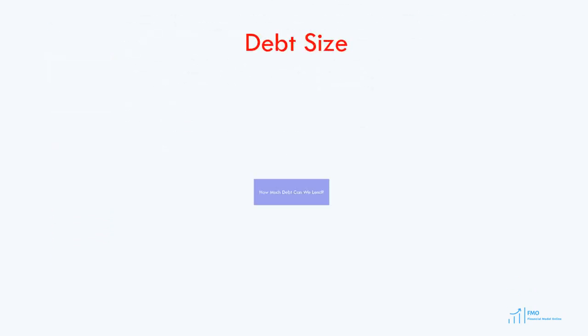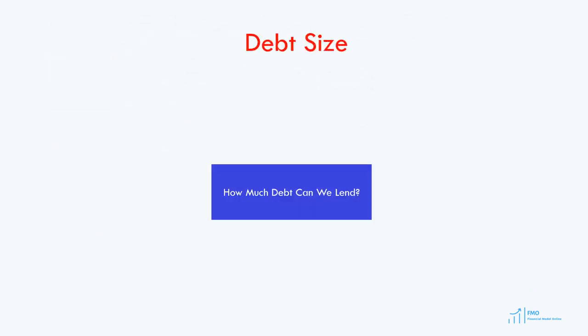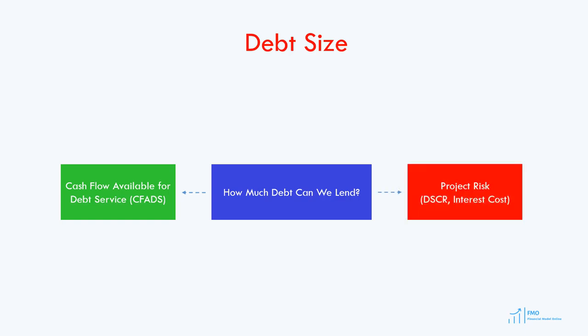Sizing the debt is essentially answering the question of how much debt lenders can lend to the project. Since lenders will only be repaid from the cash flows generated by the project company, the cash flow available for debt service is an important variable for debt size determination. The larger the cash flow, the larger the debt size will be. The higher the project risk, the less debt lenders can extend to the project company, because high project riskiness will result in high DSCR and interest costs.